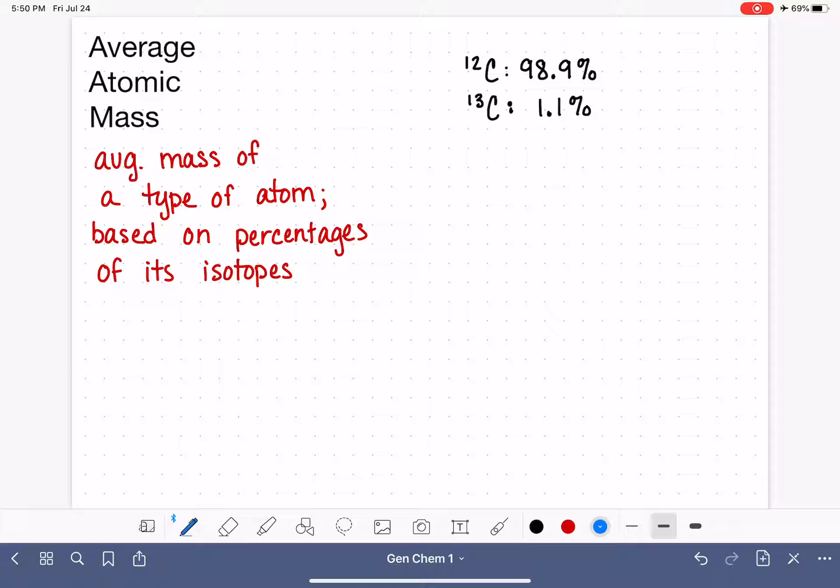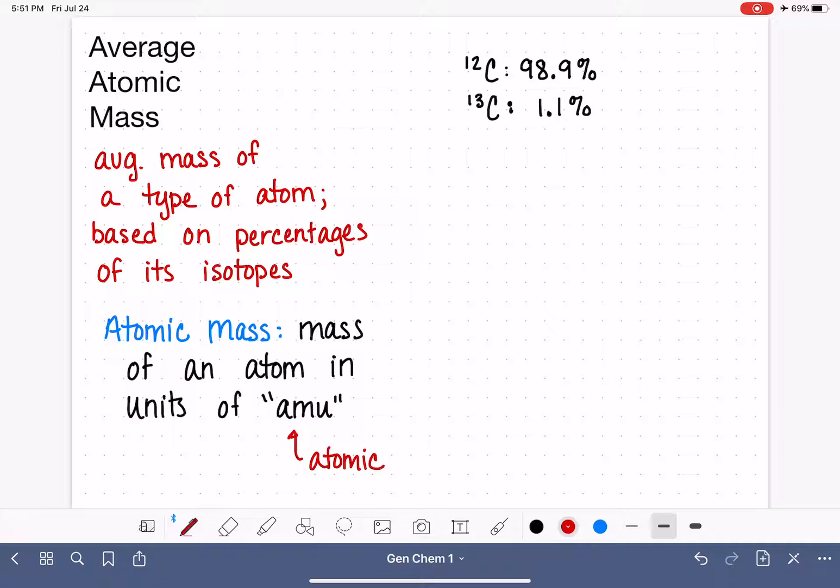When we're calculating the average atomic mass, and we're needing to multiply the percentages of the isotopes by their masses, we are going to use something called atomic mass. This is, as the name sounds, the mass of an atom, an individual atom. And the units that we are going to use are called AMU. AMU stands for Atomic Mass Unit. And it's a mass unit, just like gram or pound or kilogram or ounce. So the AMU is just another unit of mass. And it's one that we don't use very often, so you're probably not familiar with it. But it is just simply a mass unit.